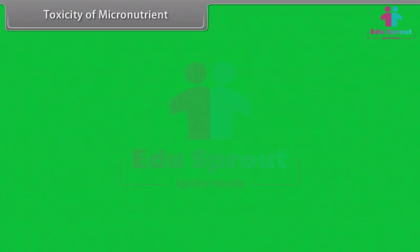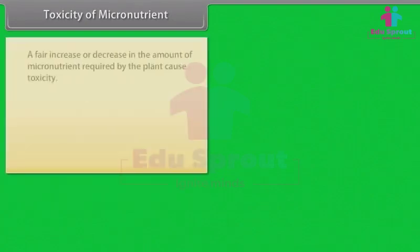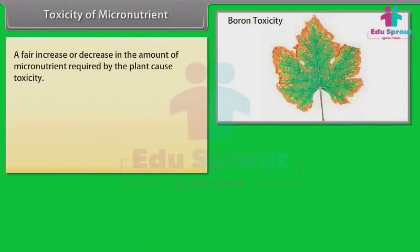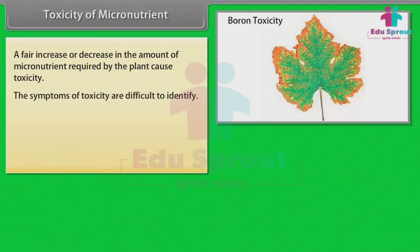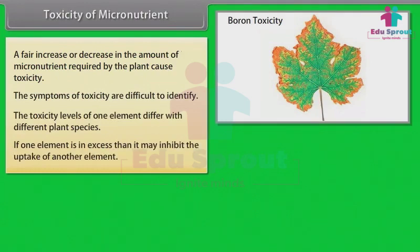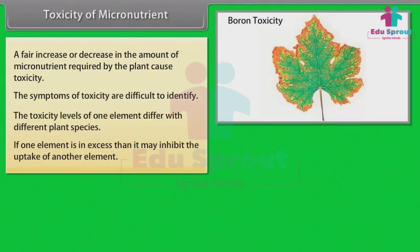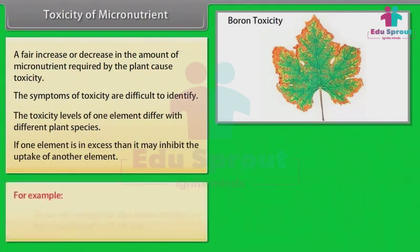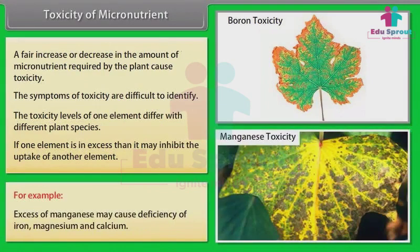A fair increase or decrease in the amount of micronutrient required by the plant causes toxicity. The symptoms of toxicity are difficult to identify. The toxicity levels of one element differ with different plant species. If one element is in excess, it may inhibit the uptake of another element — for example, excess of manganese may cause deficiency of iron, magnesium, and calcium.